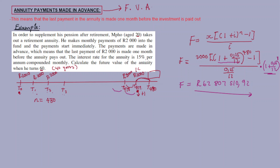So for payments made in advance, you need to multiply by the interest raised to the exponent of the remaining number of months before the last payment. I hope you enjoyed it. In the description box there are more examples on annuities made in advance. Check out the description box for any other content related to financial mathematics for Grade 12. Like, share, and subscribe — peace.